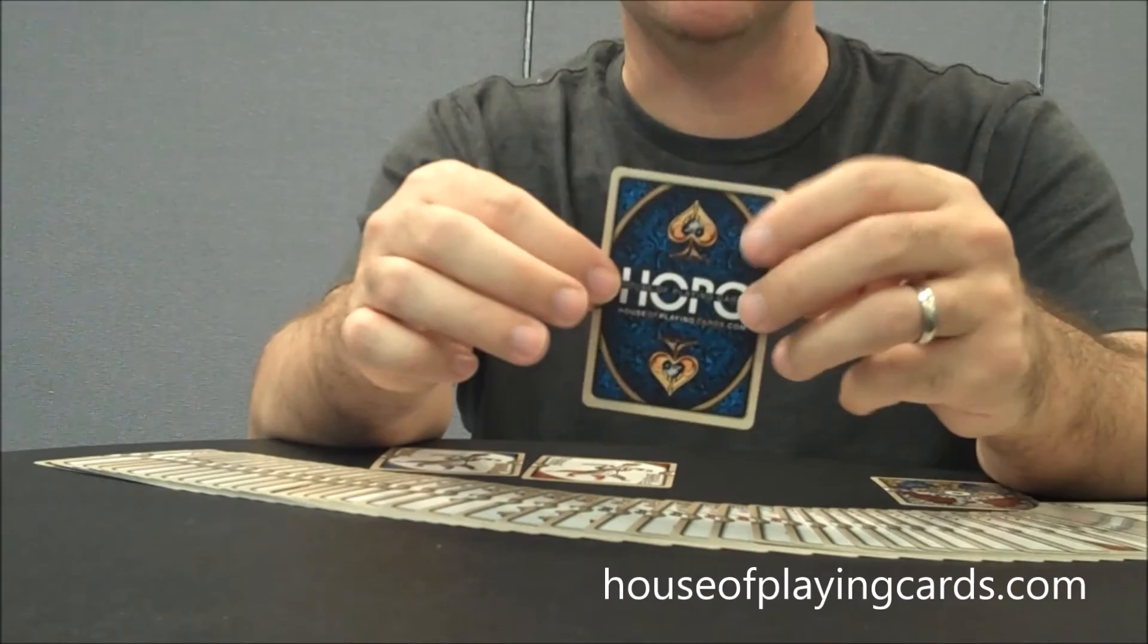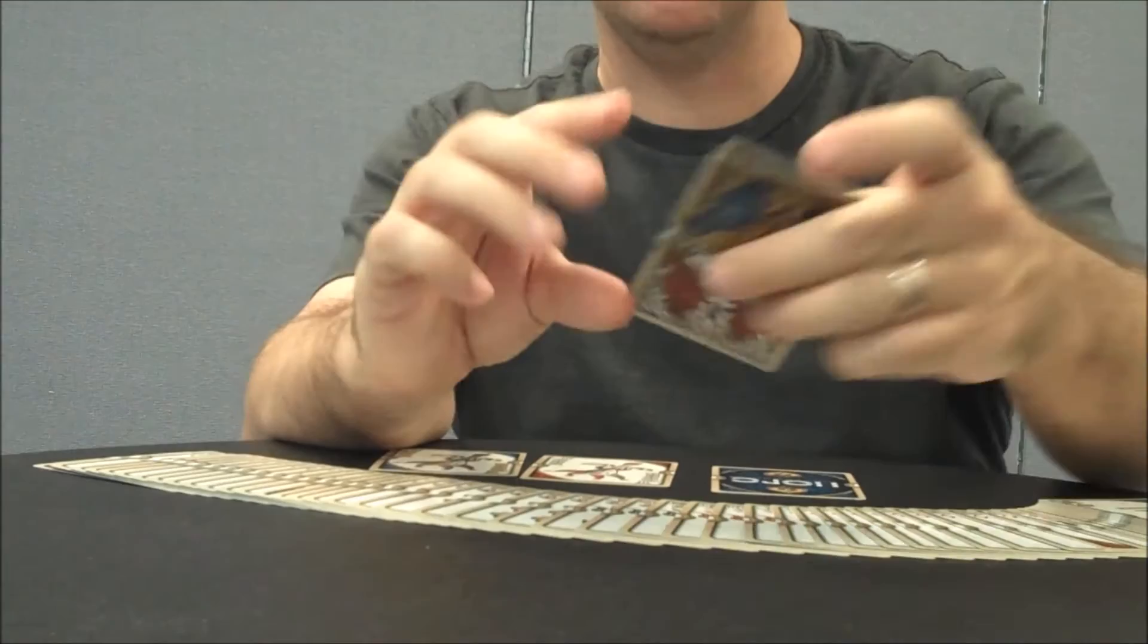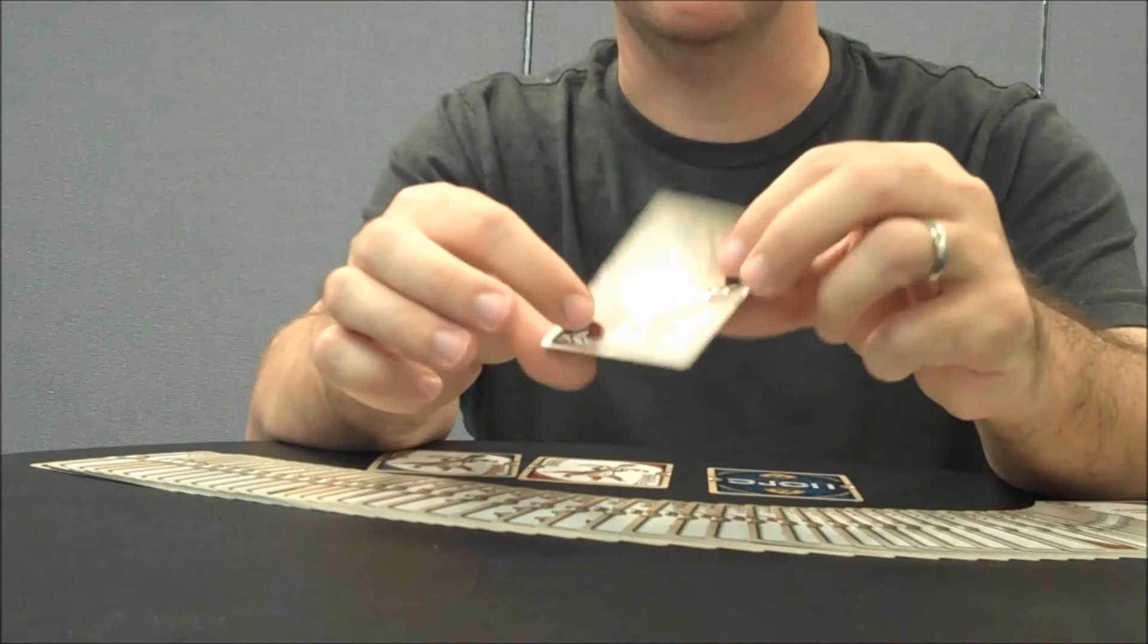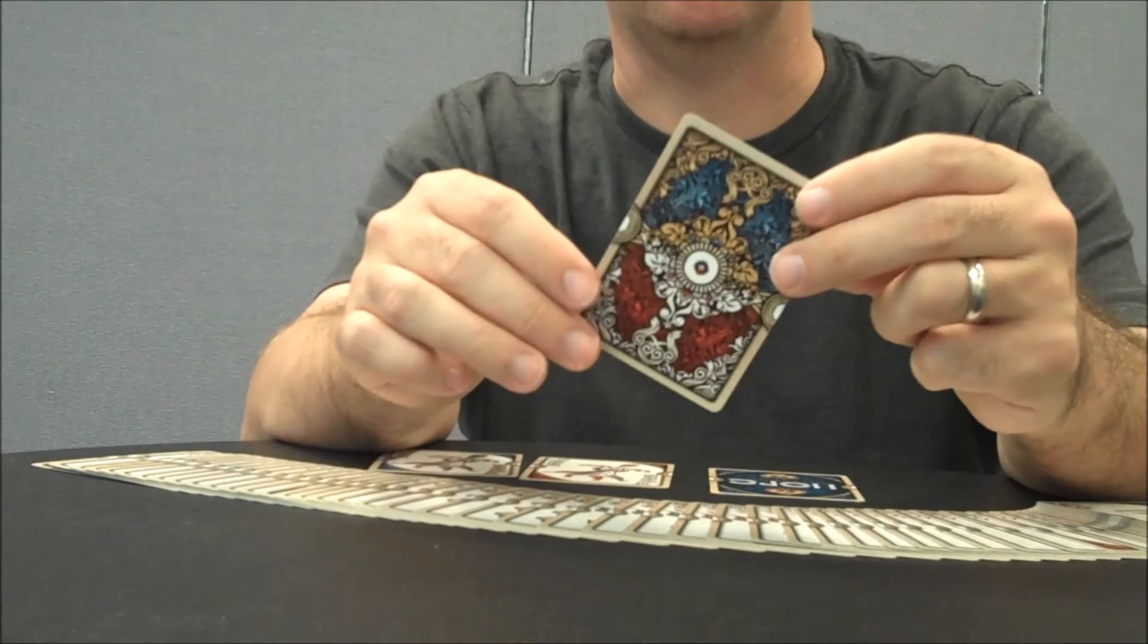You're going to get an HOPC, House of Playing Cards ad card, and the back design is the back design of the deck. And then you're going to get this double backer gaff, which is a half blue, half red, or half amethyst, half scarlet back design. Maybe you could do some sort of cool magic trick with that. I haven't really quite played around with it yet.